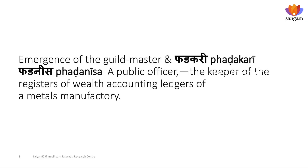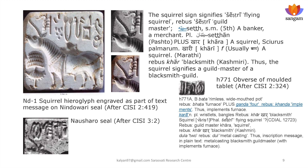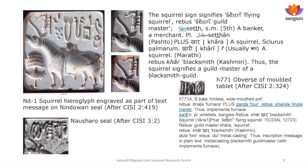The organization of artisans into guilds was a remarkable social engineering. It resulted in the emergence of a guild master — a fadakari, a public officer and keeper of the register of wealth accounting ledgers of a metals manufactory. Such a guild master is shown on a seal. The pictorial motif, the symbol or the Induscript sign, is a squirrel — a palm squirrel. The squirrel signifies 'Shresti' by rebus: guild master, banker, merchant. Both words for squirrel — 'Shresti' and 'Khar' — signify guild master and metal worker. 'Kara/Khar' meaning squirrel, rebus 'Khar' means blacksmith. Thus the squirrel signifies a guild master of a blacksmith guild, who regulates artisan activities in the organizational structure called the guild.